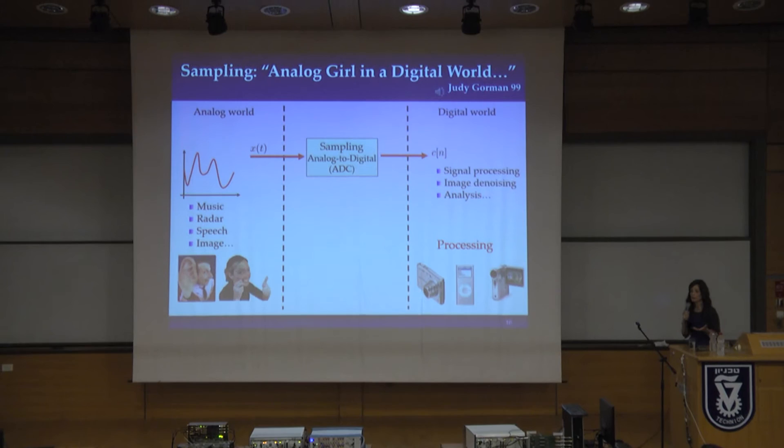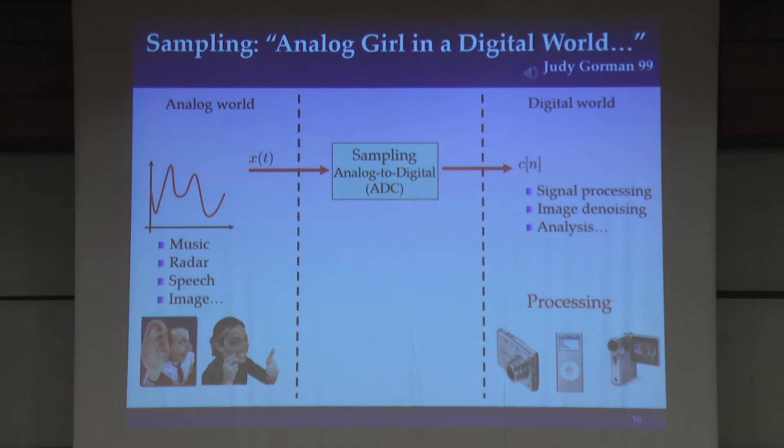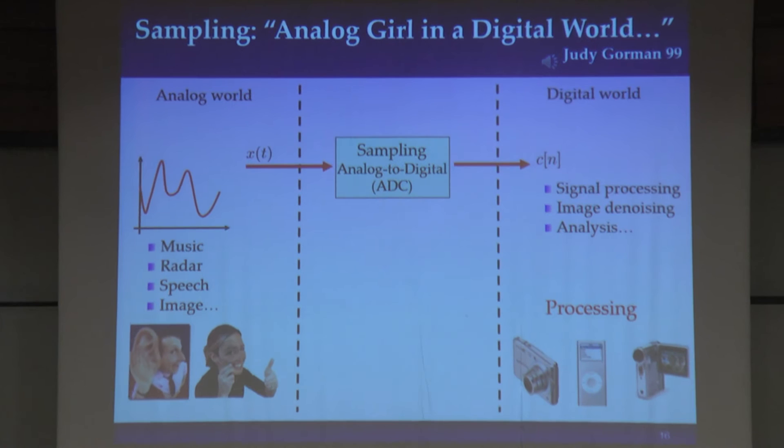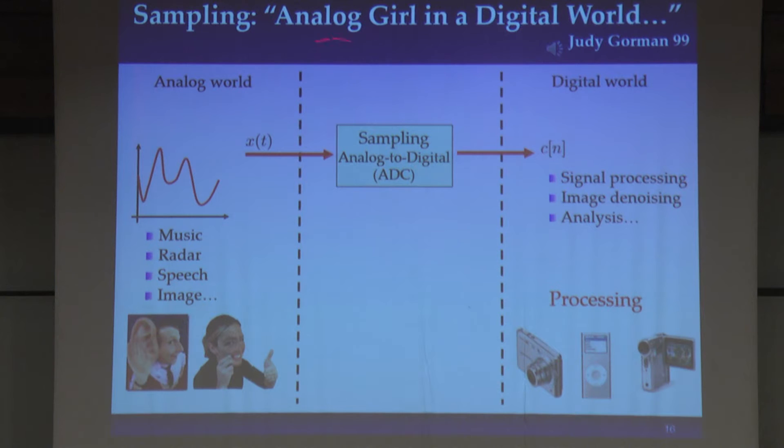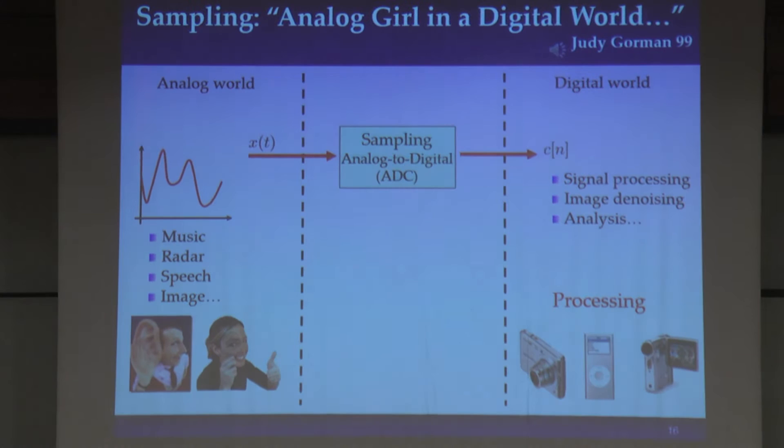In sampling, what we care about are analog or continuous time signals, but we know that today more and more of the processing is being done in the digital domain due to the flexibility it offers. If we want to faithfully represent continuous time signals in digital form, we have to design our ADC — our analog-to-digital converter — so that we preserve the important information in the signal.